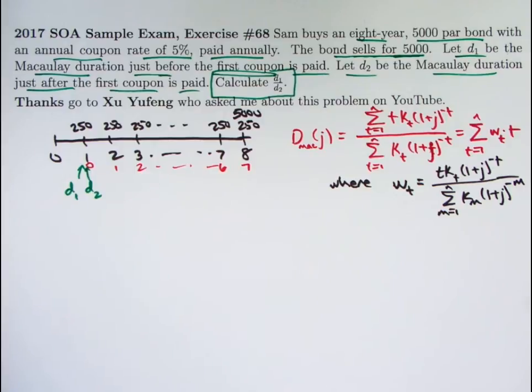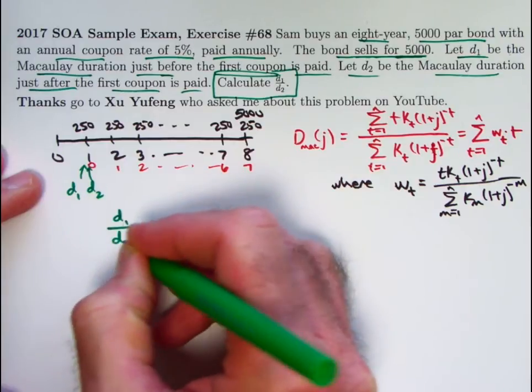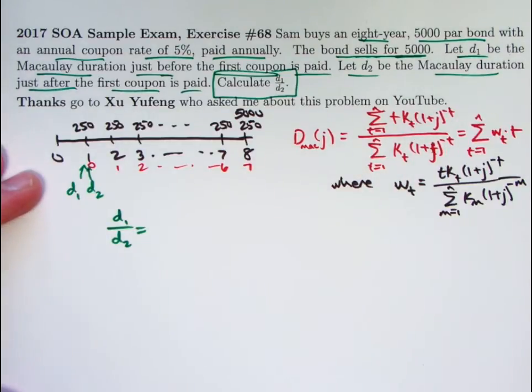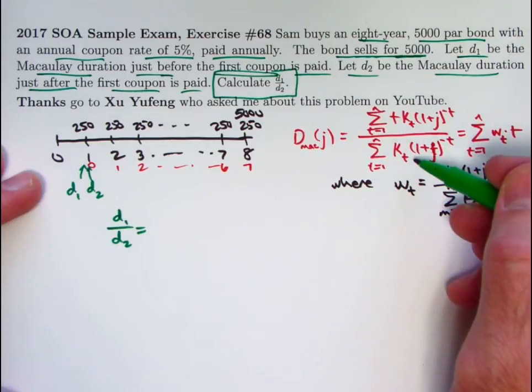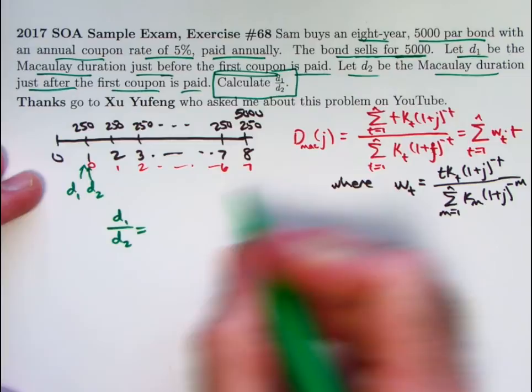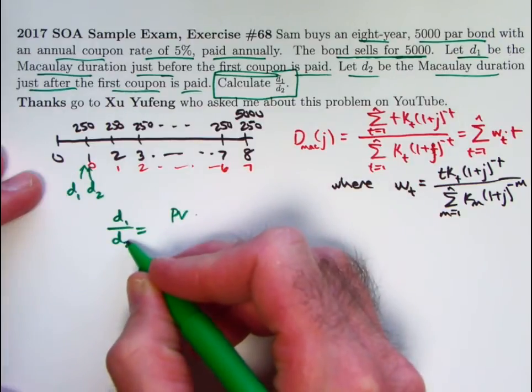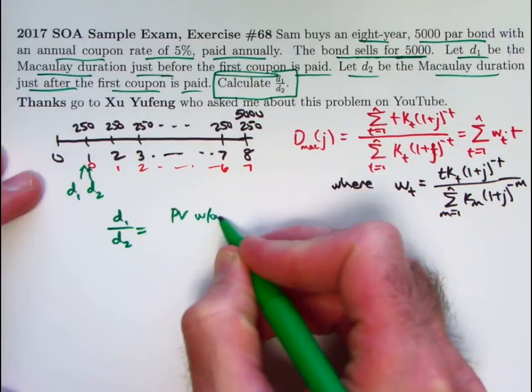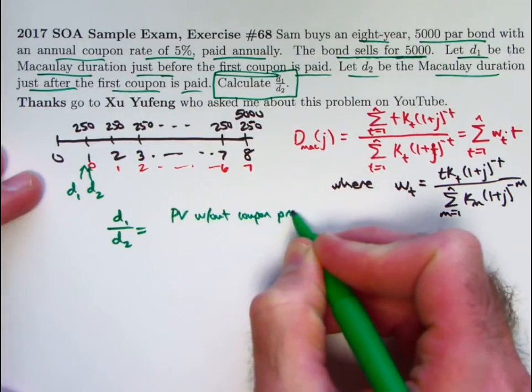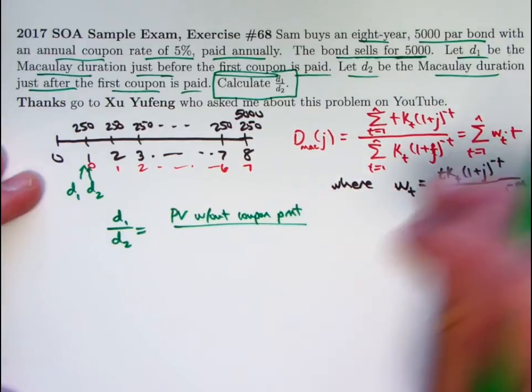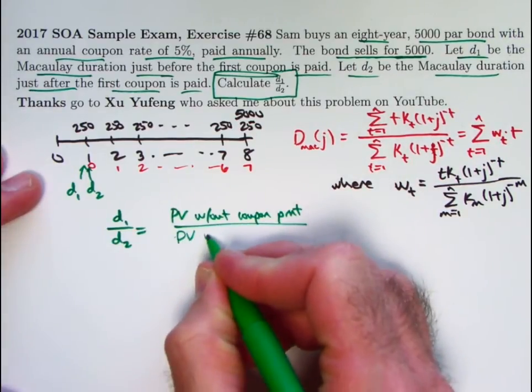It's only the denominator, which is the price of the bond, either right before the coupon is paid, or right after it's paid, that changes. So let's go ahead and write that down. D1 divided by D2 is really going to be, since the numerator of both of these things is the same, those numerators will cancel, and we'll just get 1 over the denominator in each case, and then we can flip the fractions. It's really going to be the present value of the series of payments for D2. That would be without that coupon. I'll go ahead and write without coupon payment. Divided by the present value with the coupon payment. That comes from D1, actually. Again, we have to flip the fraction here. So it's the present value with that coupon payment.